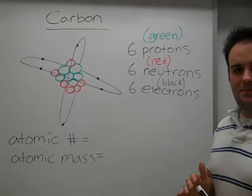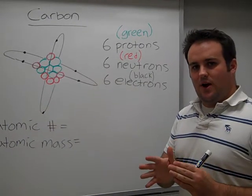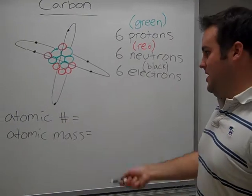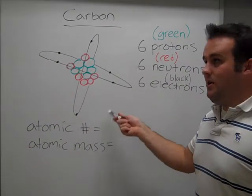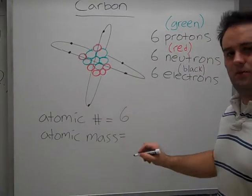If you remember from our periodic table lesson, if you looked at the individual square of an element, the atomic number is equal to the number of protons in the atom. So the atomic number of carbon, because it has six protons, is six.